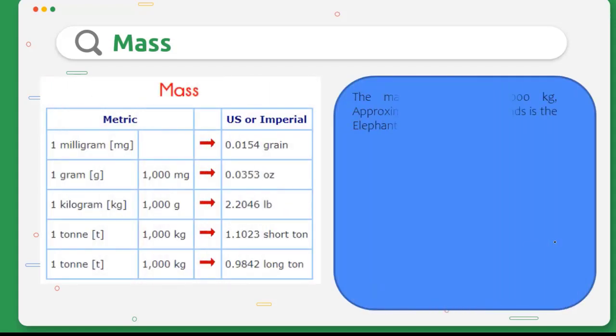For the relation in mass measurement, we'll find the relation like this. The question will be: the mass of an elephant is 3000 kilograms. Approximately, how many pounds is the elephant? For 1 kilogram equals 2.2046 pounds.